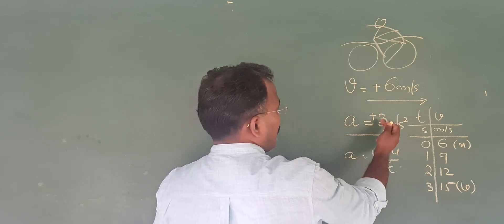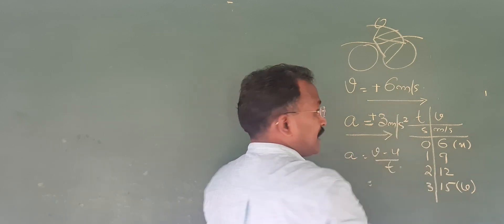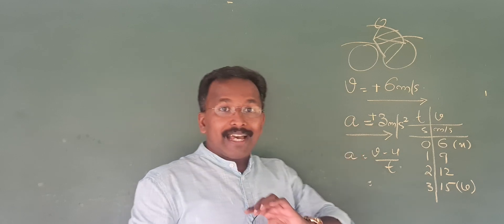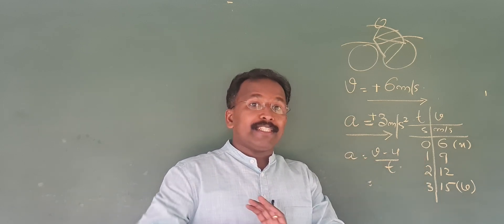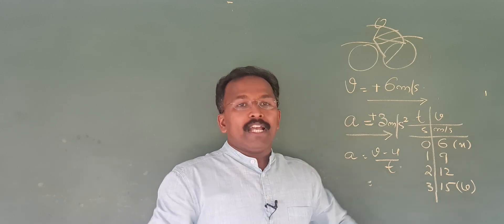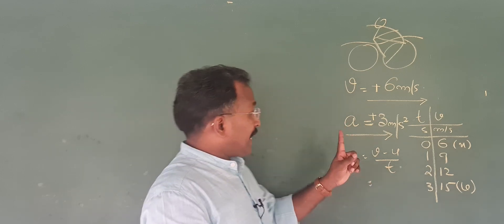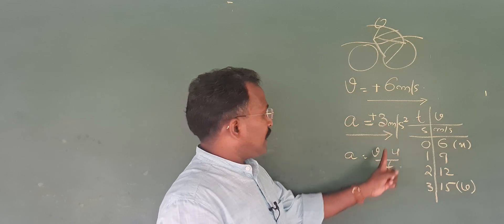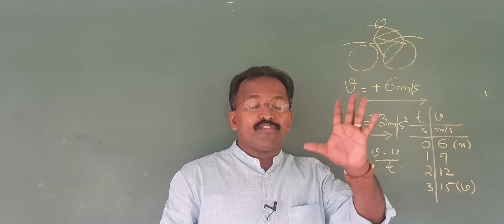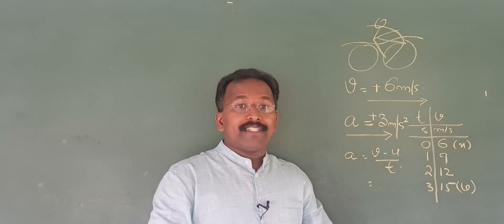It's a speeding bike. It's a slowing down bike. If velocity and acceleration have the same sign, it is speeding up. If they have different signs, they are slowing down. Acceleration, by definition, is the change of velocity in one second. If displacement in one second is velocity, then change of velocity in one second is acceleration.